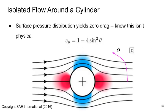The second result I want to talk about is the isolated flow around a cylinder. Of course, the surface pressure distribution is going to yield zero drag, and we know this isn't physical, but this is because it's potential flow. But now if we introduce the theta coordinate, which is a tangential coordinate that starts from zero on the backside and moves around counterclockwise, we can get the result that the pressure coefficient is one minus four times the sine squared of that angle.